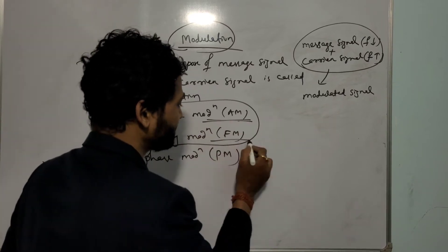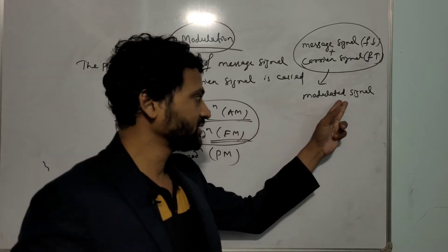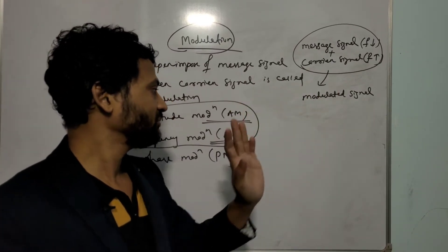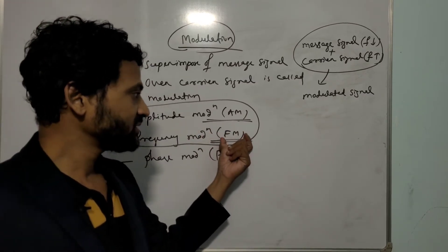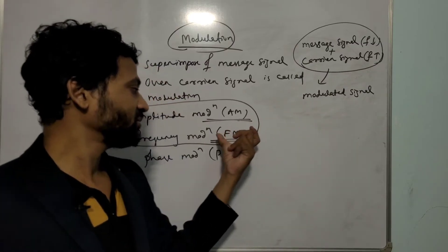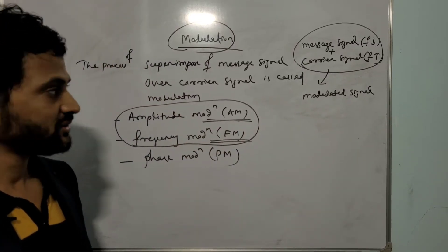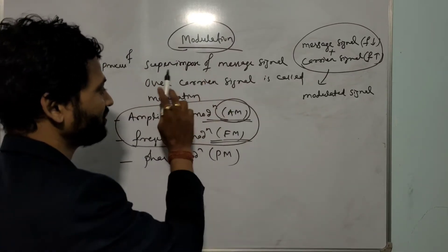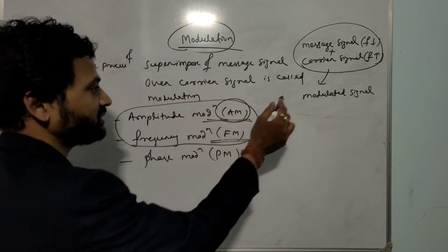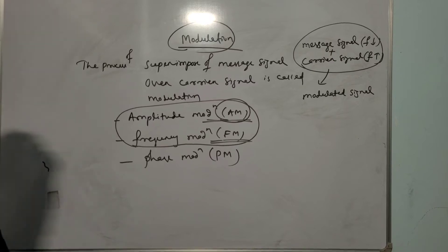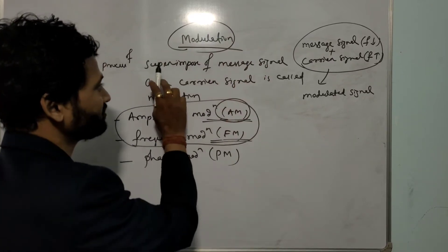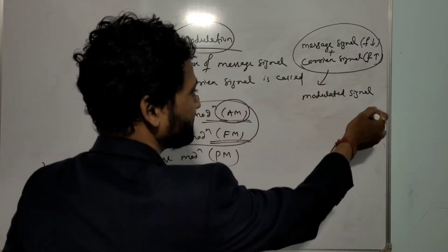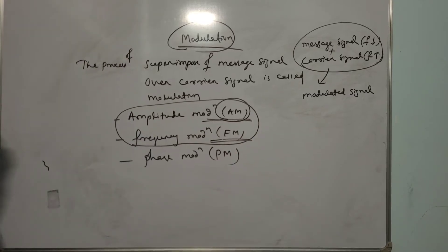What is amplitude modulation? The modulated signal we get — the amplitude of that modulated signal will change. That is called amplitude modulation. And what is frequency modulation? The frequency of that modulated signal will change. That is called frequency modulation. So the definition of amplitude modulation: the superimposition of message signal over carrier signal such that the amplitude of the modulated signal changes. And frequency modulation: the superimposition of message signal over carrier signal by which the frequency of that modulated signal will change — that is called FM or frequency modulation.